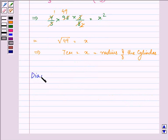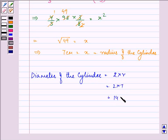We were required to find out the diameter of the cylinder. That will be equal to 2 × r, that is equal to 2 × 7, further 14 cm.